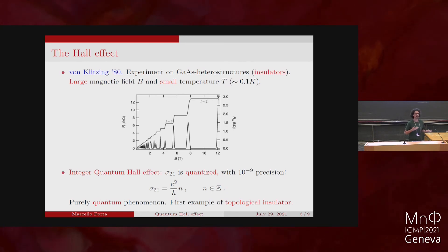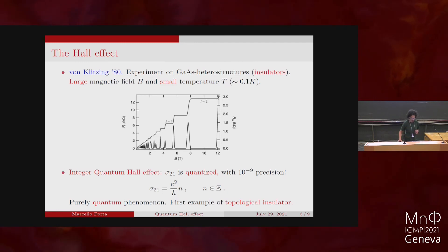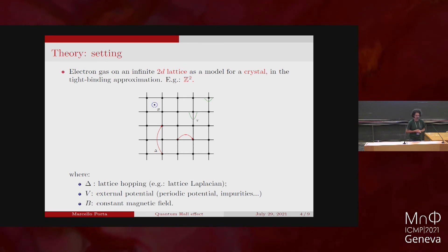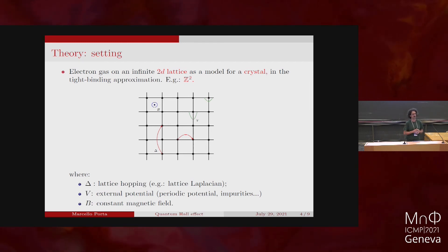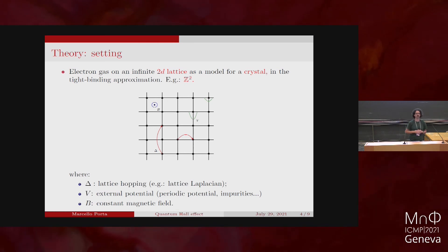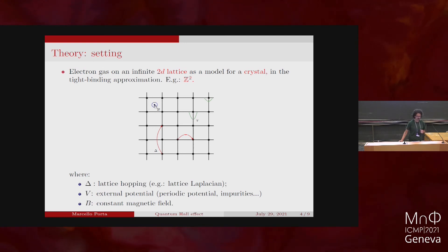These integers are really there — the experiment gives integers precise to 10^{-9}, remarkably one of the most precise measurements in physics. It is a purely quantum phenomenon and is now acknowledged as the first example of a topological insulator: a material whose transport properties can be understood via topological ideas. Now, what is the setting for the mathematical physicist? We describe electrons hopping on an infinite two-dimensional crystal, approximated by a periodic lattice extending in all directions — say Z^2. The tight-binding approximation: electrons hop from atom to atom.